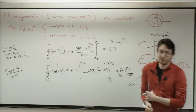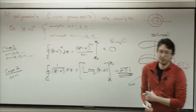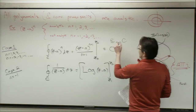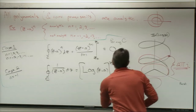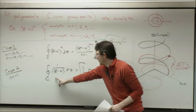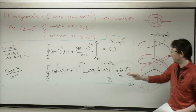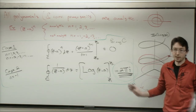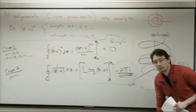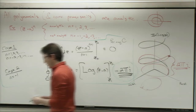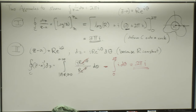The basic fact that matters - and the thing you'll remember years from now - is this: the closed contour integral of 1/(z-a) equals 2πi, and that's the only interesting case. Everything else goes to 0. This is probably one of the most important results in complex analysis.